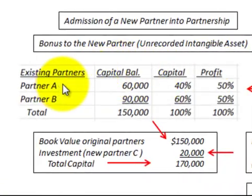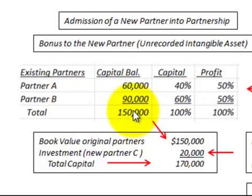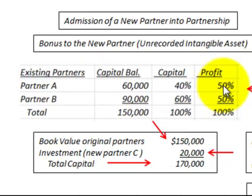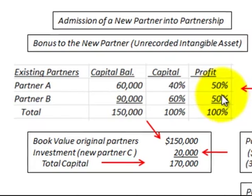We have partner A and partner B, and they have a capital balance of $60,000 and $90,000 respectively, for a total capital amount of $150,000. They have a profit ratio where each would get 50% — partner A gets 50% and partner B gets 50% of the partnership.